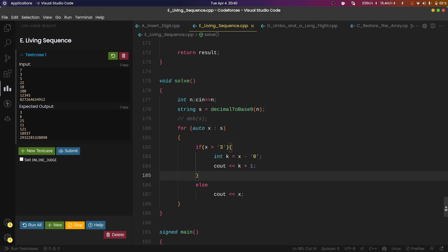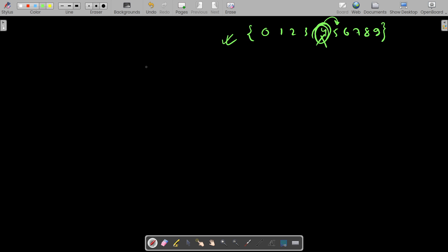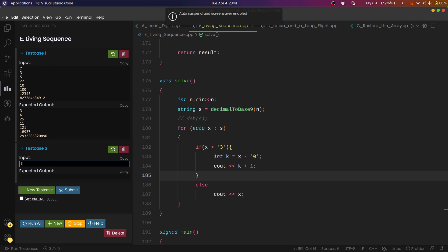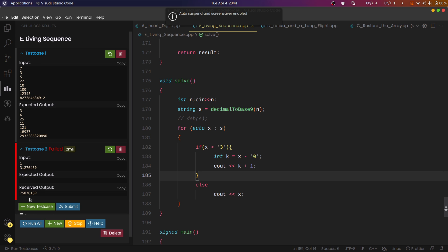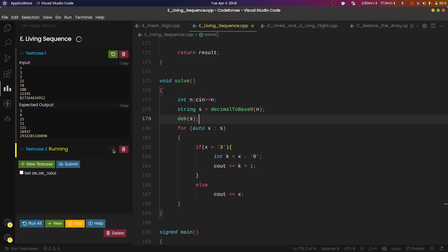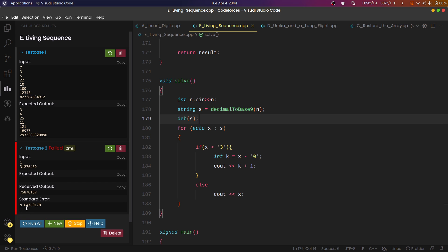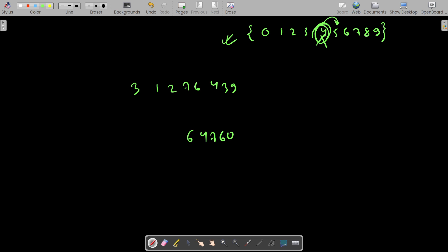Then I am just presenting the output. For example, if my number is 312764339, let me take it as input and check the output. Let me debug to see what I am getting as a result in base 9. I am getting 647601781. But since all my digits which are greater than 3 I will increment by 1, since 6 is greater than 3, my answer will be 7. 4 will become 5, 7 will become 8, 6 will become 7, 0 will be 0, 1 will be 1, 7 will become 8, and 8 will become 9. So this will be my answer.